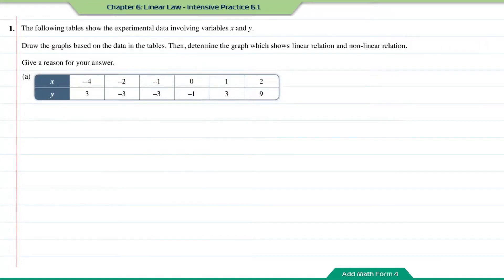Intensive practice 6.1, question number one. The following table shows the experimental data involving variables x and y. Draw the graph based on the data in the tables, then determine which graph shows linear relations and non-linear relations, and give a reason for your answer. For question a, we're going to draw the graph of y against x.